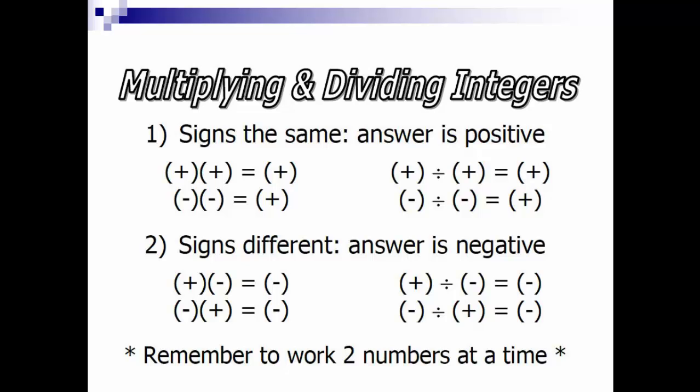When the signs are different, the answer will be negative. So a positive times a negative is a negative. A positive divided by a negative is a negative. A negative times a positive is a negative. And a negative divided by a positive is a negative. These are the rules you need to remember when multiplying and dividing integers.